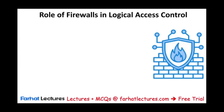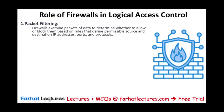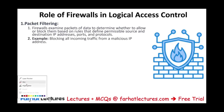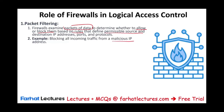One role firewalls can perform is packet filtering. They examine packets of data — this is how data is communicated on the internet, through packets. They determine whether to allow or block packets based on rules that define permissible source and destination IP addresses, ports, and protocol. For example, we can block all incoming traffic from malicious IP addresses, or block employees from accessing certain websites.